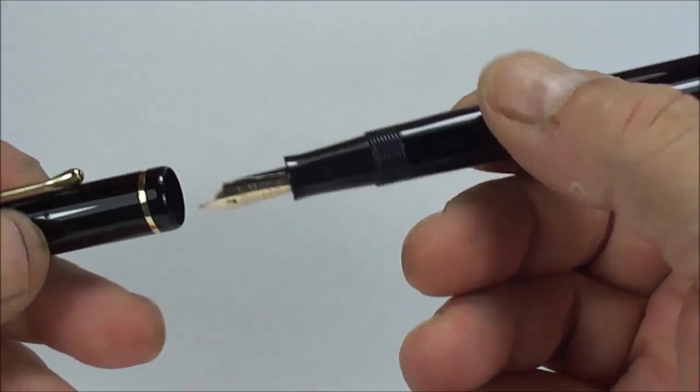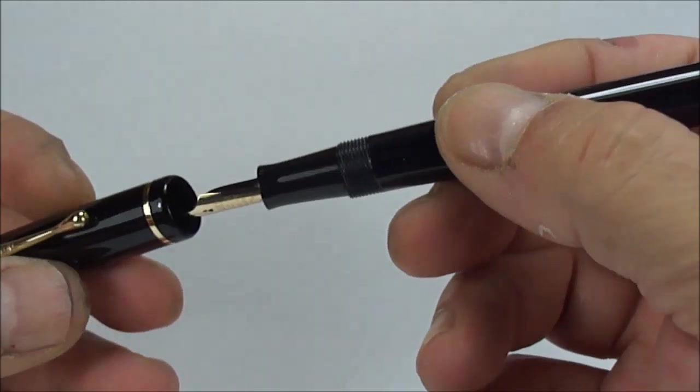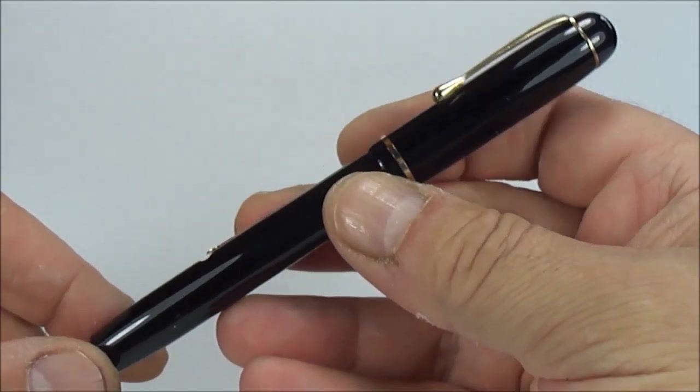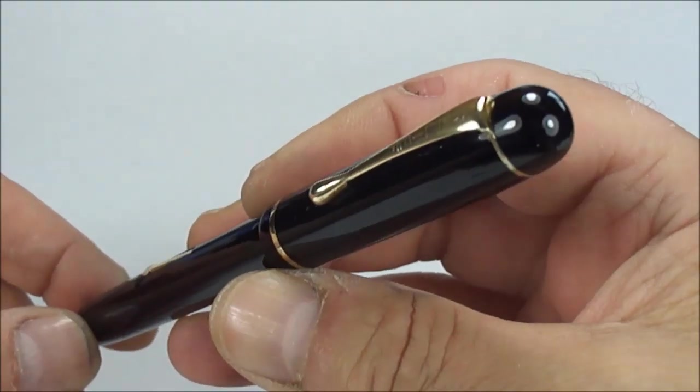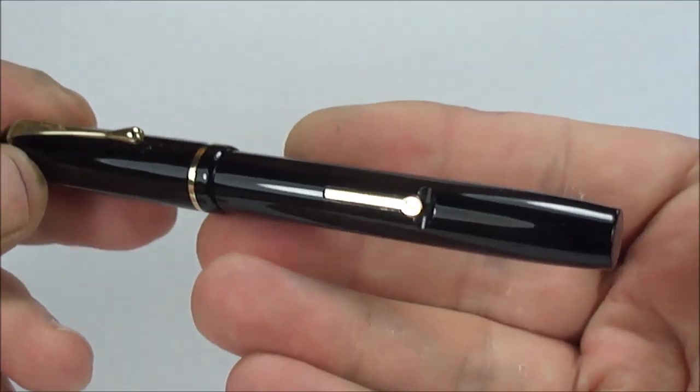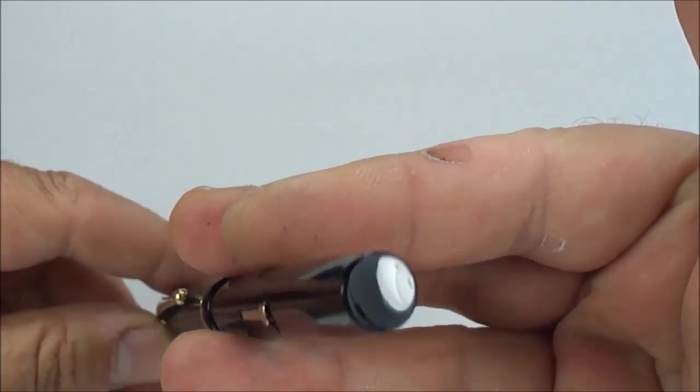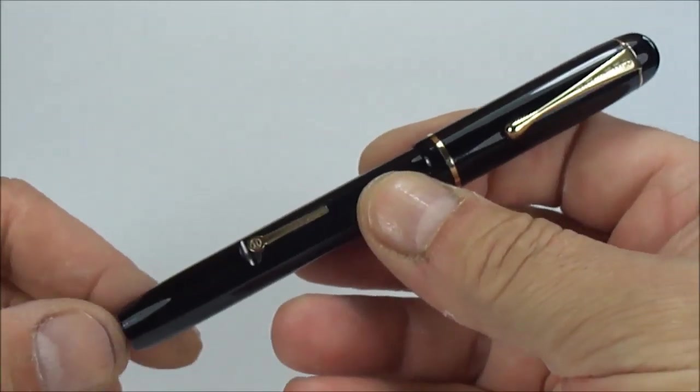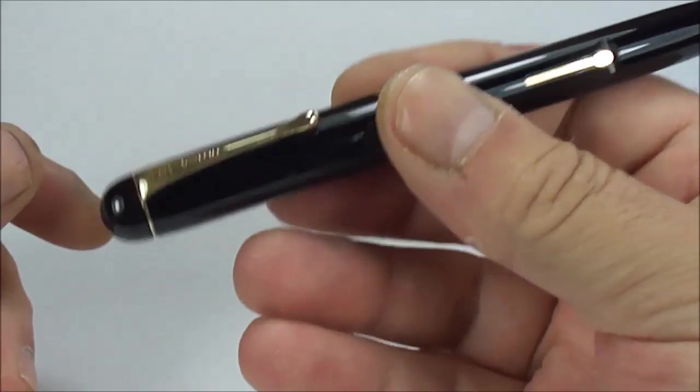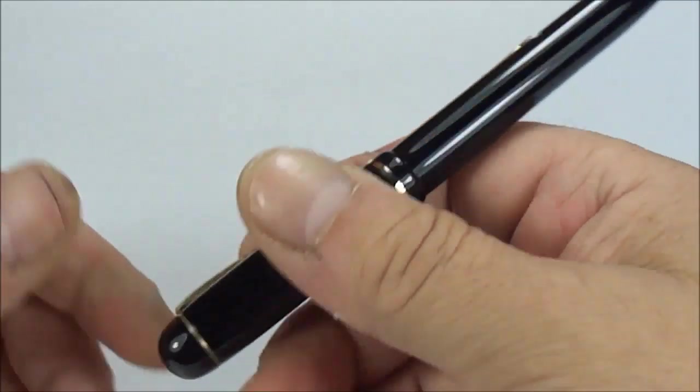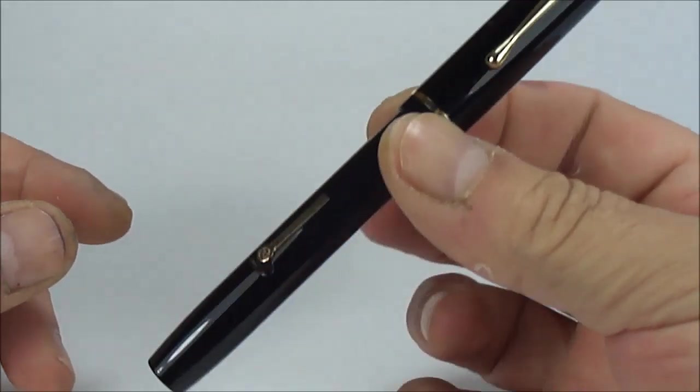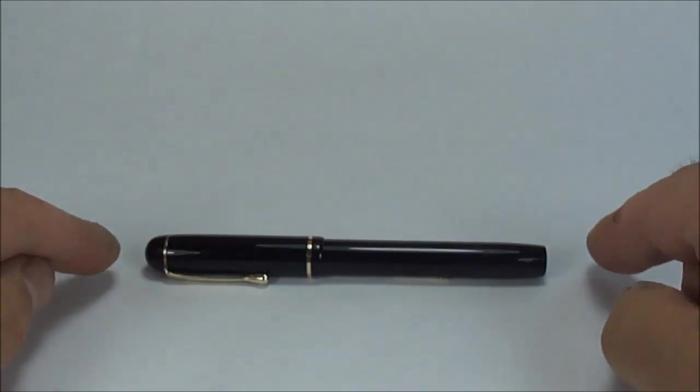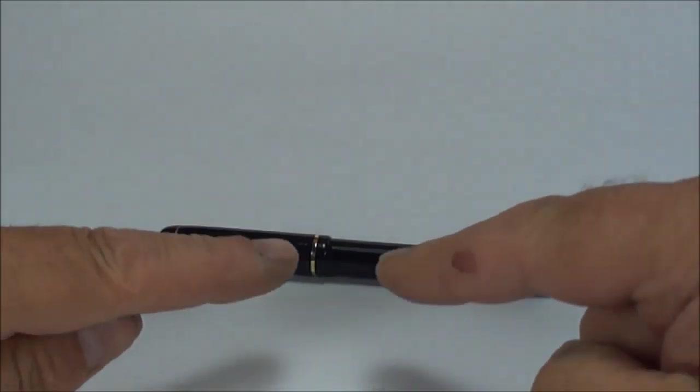So there we have it, this absolutely stunning Esterbrook Relief No. 2 fountain pen, No. 2-L or lever fountain pen, in absolutely beautiful condition. I've fully restored it. It's as if it just came out of the factory, absolutely lovely, and quite a large pen. So for you people that have large hands, this could be the pen for you.